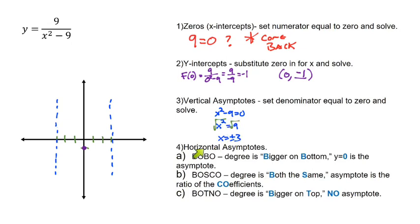Now let's look at our horizontal asymptotes, and I'm giving you this acronym in the past, Bobo Bosco and Botno. If the degree is bigger on bottom, y equals zero is the asymptote. Well that's really what we have here, the degree is bigger on bottom. In our denominator we're second degree, in our numerator we're zeroth degree. So we are actually gonna be this first situation right here, y equals zero is the asymptote.